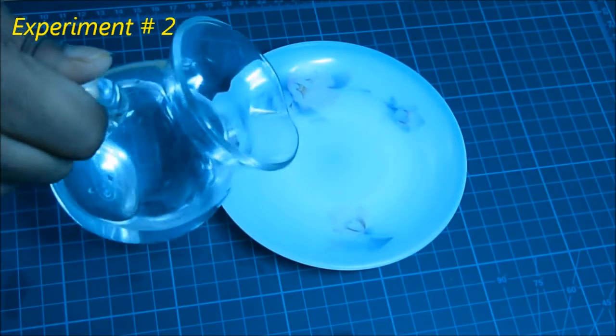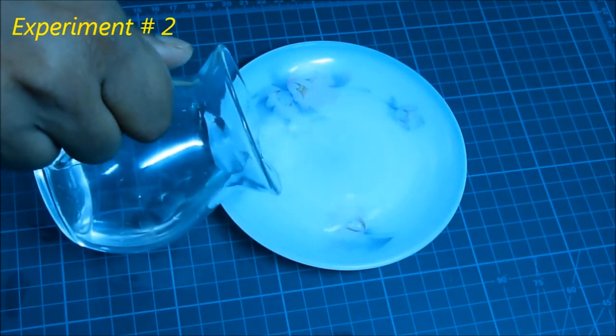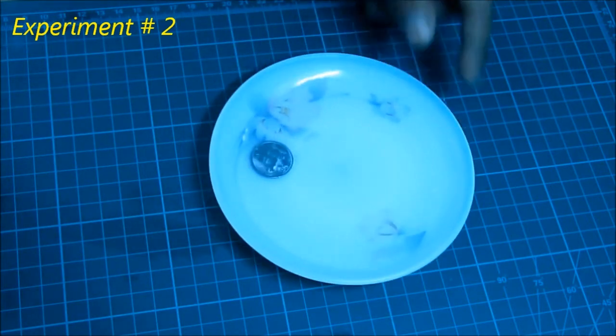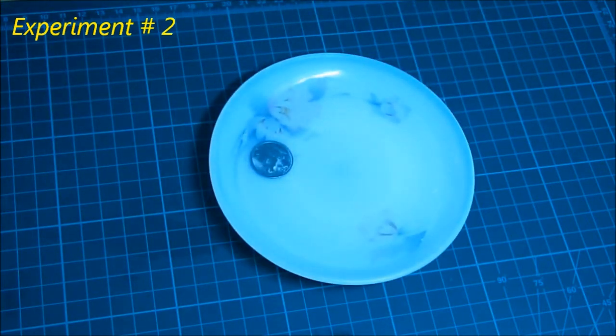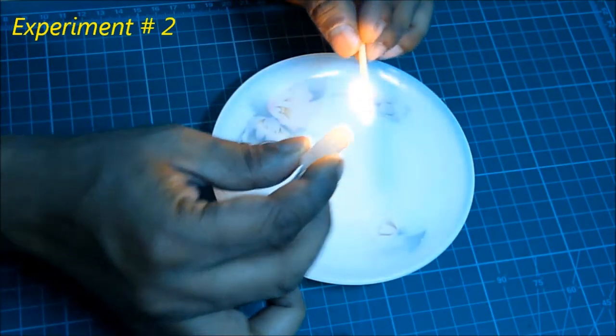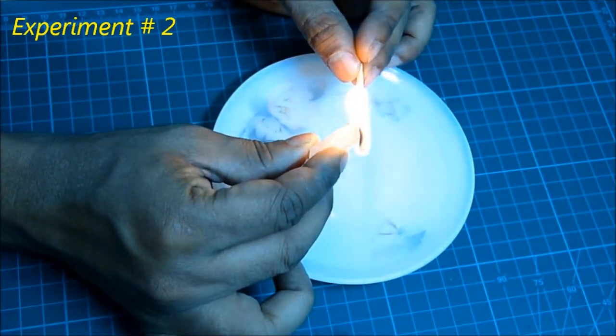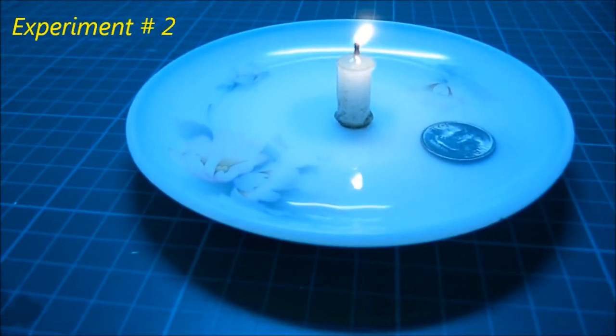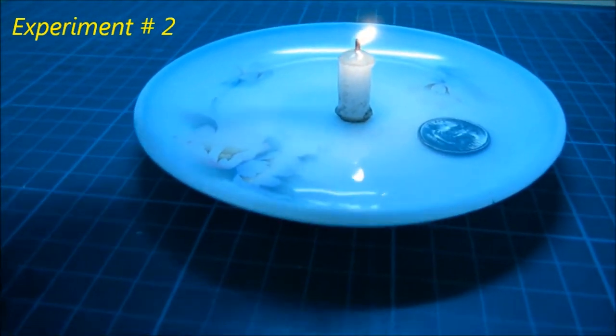Experiment two: take some water on a plate, put a coin into it. Now, without touching the water, you have to take the coin out. How to? Let's see. Take a small candle and stick it in the middle. Light it, put a glass on top of it.